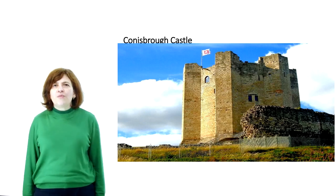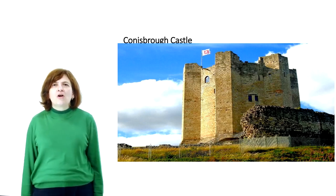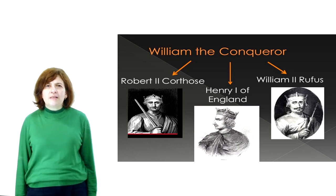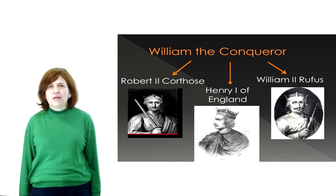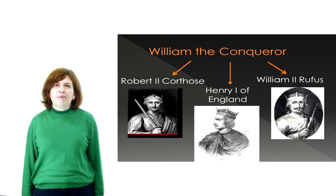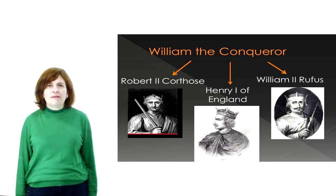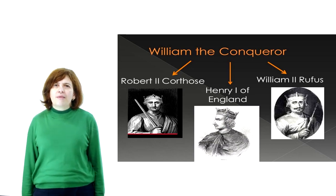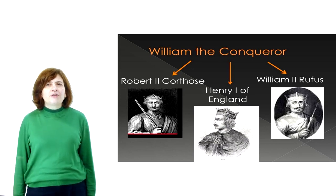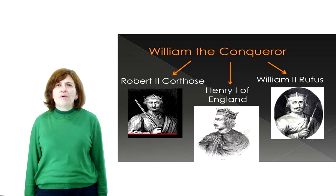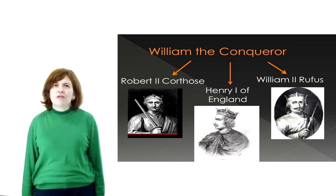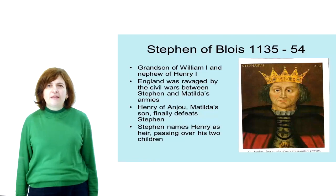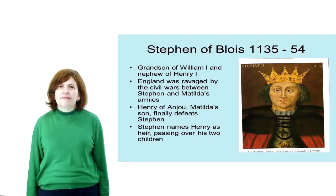The state which William I created called for strong kings. Fortunately, he was succeeded by two of his sons who were just such men, but disaster was to strike later when his grandson seized the throne. The crown passed first to the king's second son, William Rufus; next to his fourth son, Henry I; and finally to his grandson, Stephen. Stephen was a weak king, so the result was anarchy.